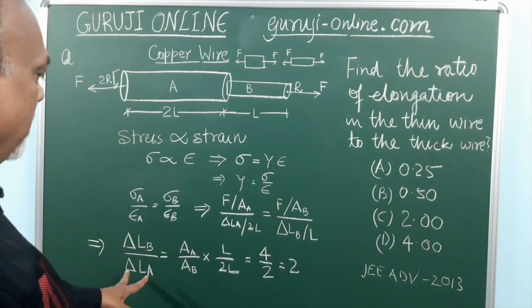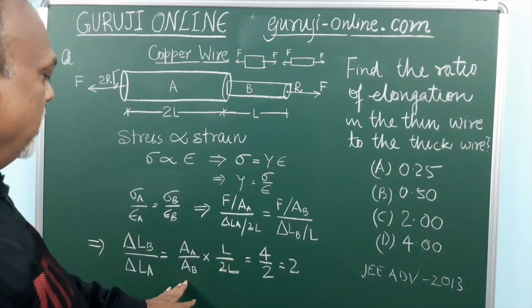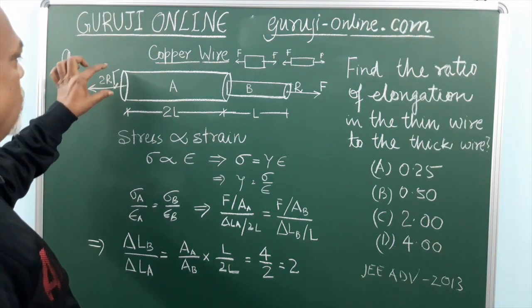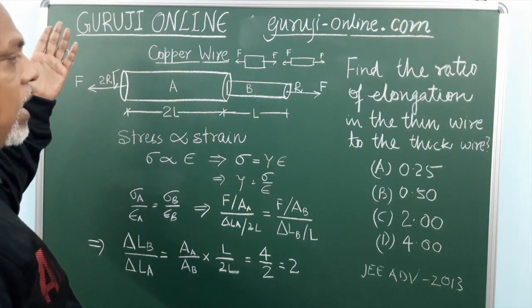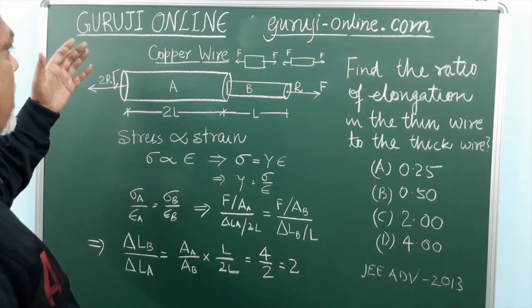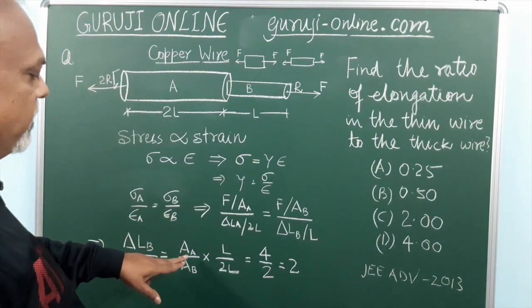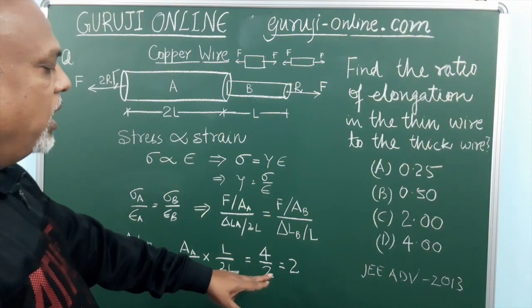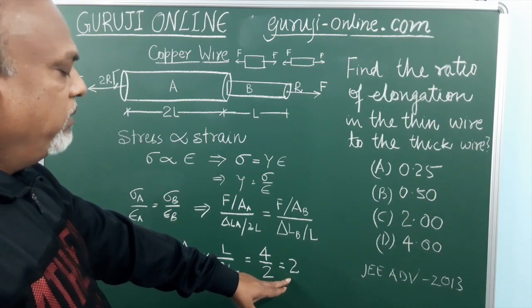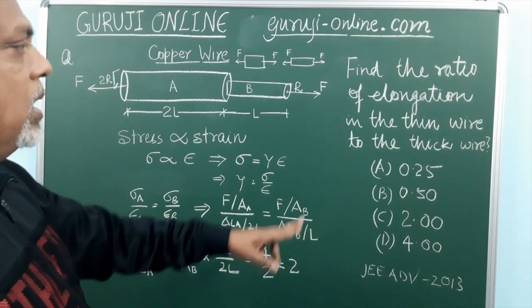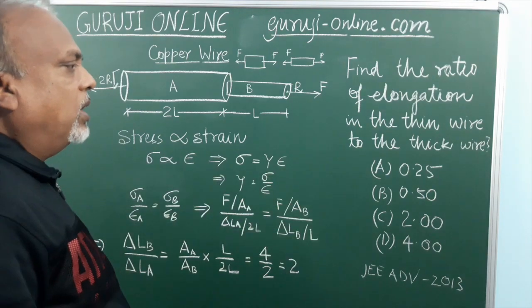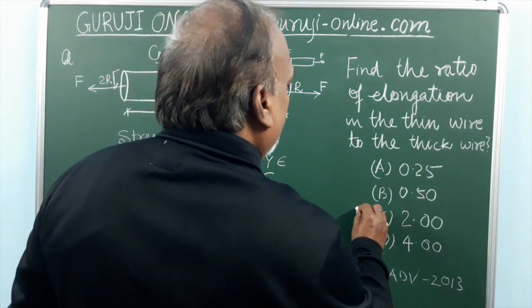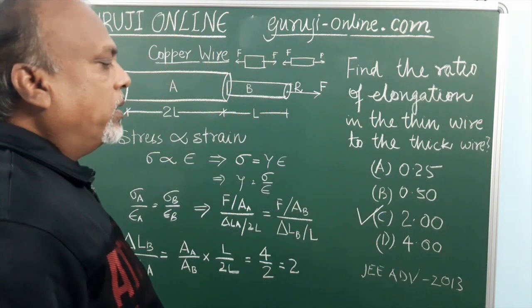So we can find out the ratio like this: since this area will be having 4 times because it is 2R, that is area is pi R square, so it will be 4 times. So this ratio will be 4 times and this ratio is 1 by 2. And the answer will come as 2. Means the elongation in the thin wire to the thick wire will be 2. So our answer is basically C.